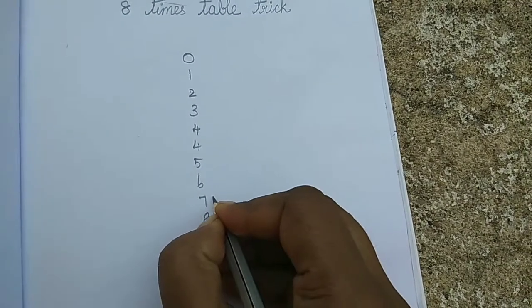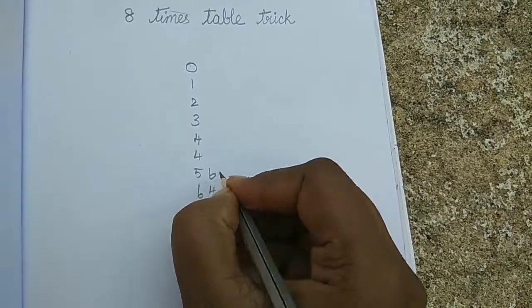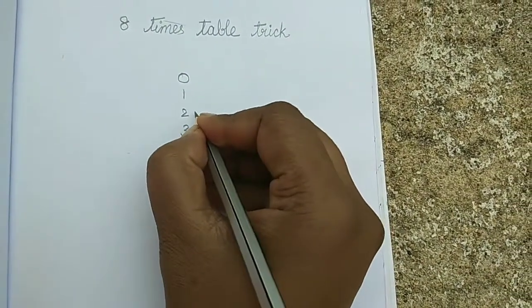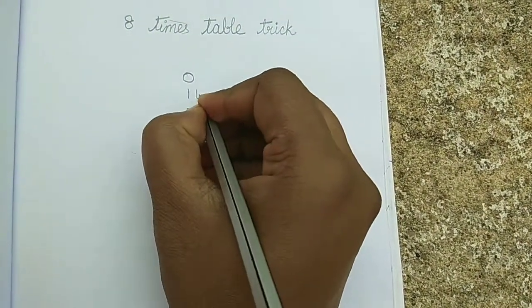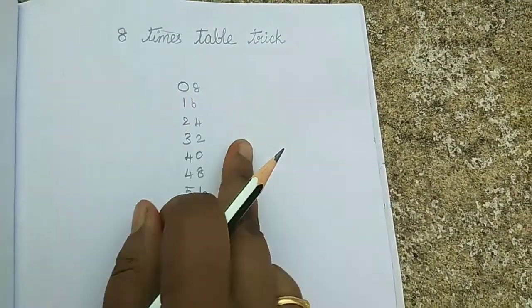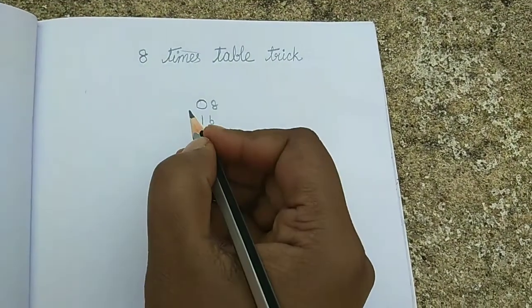Write 0, 2, 4, 6, 8, and again 0, 2, 4, 6, 8 from bottom to top. Now we got the 8 times table. Now see: